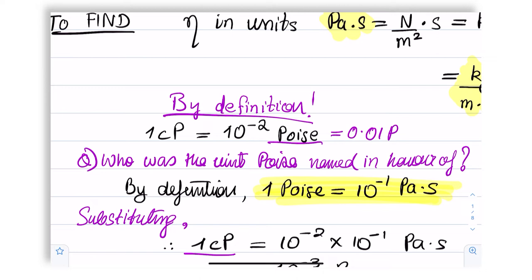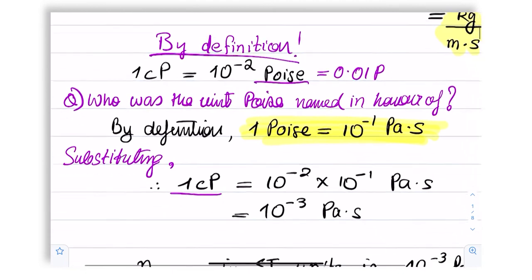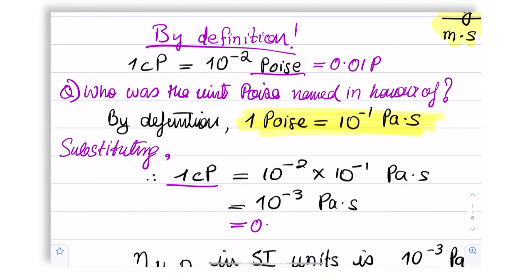And hopefully you are doing this on your own. The answer, therefore, to answer the question, what is the conversion factor from one centipoise to SI units for the viscosity of water is 0.001 Pascal second, which we find in biophysics much more convenient to write as 10 to the power minus three Pascal second.